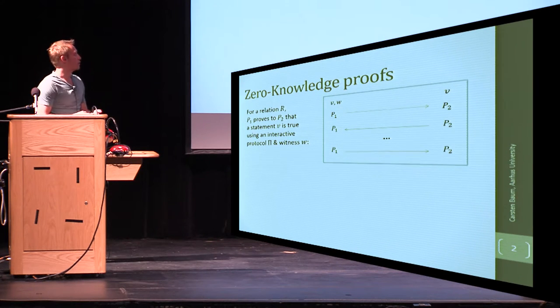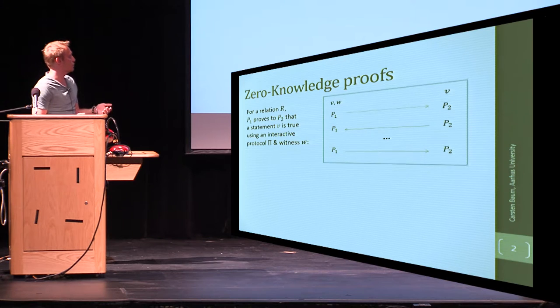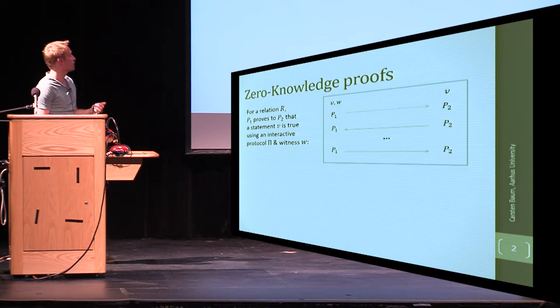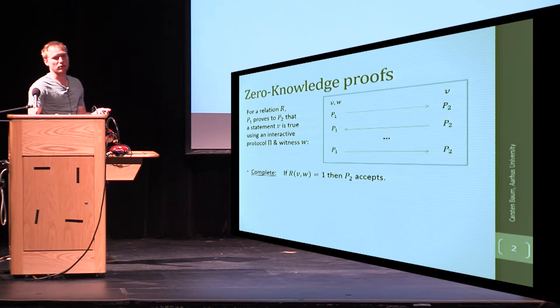The prover wants to convince the verifier of the truth of statement V using an interactive protocol PI, and therefore it has a witness W. They exchange messages and the whole protocol has to have the following three properties.